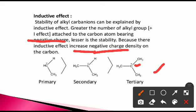The stability order of carbanions is totally opposite to that of carbocations. For carbocations, tertiary is the most stable. But for carbanions, the tertiary carbanion is the most unstable, because the +I effect of alkyl groups increases the negative charge density on the carbon, thereby decreasing stability. So for carbanions, primary is most stable, then secondary, then tertiary.